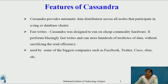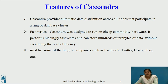Cassandra provides automatic data distribution across all nodes that participate in a ring or database cluster. Cassandra is designed to run on cheap commodity hardware machines. As the number of machines increases, it performs fast writes and can store hundreds of terabytes of data without sacrificing read efficiency. Even today, Cassandra is being used by some of the biggest companies such as Facebook, Twitter, Cisco, eBay, etc.